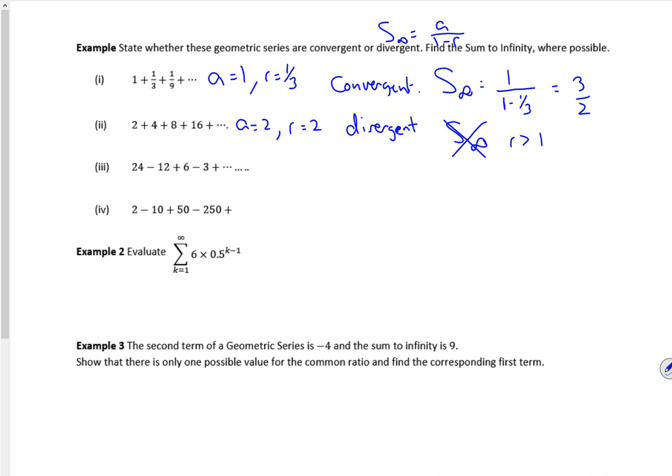So let's have a look at this one then. So a is 24, r is minus a half. That's fine, the numbers are getting smaller. So I know it's convergent. So if I have a look at this one, I've got 24 over 1 minus minus 1 half, so that's 24 over 3 over 2, so that's 48 over 3, so that's 16 there.